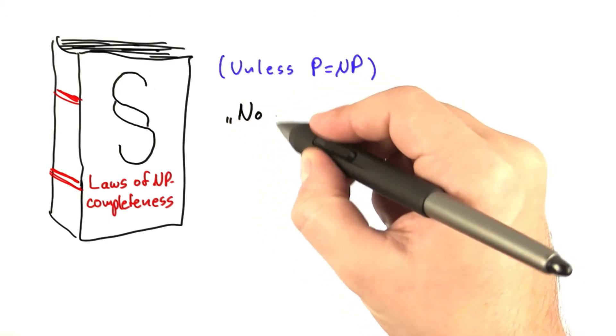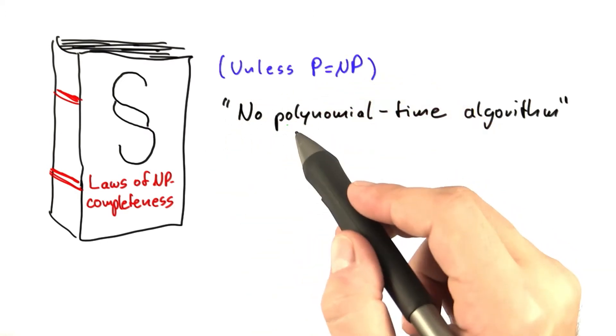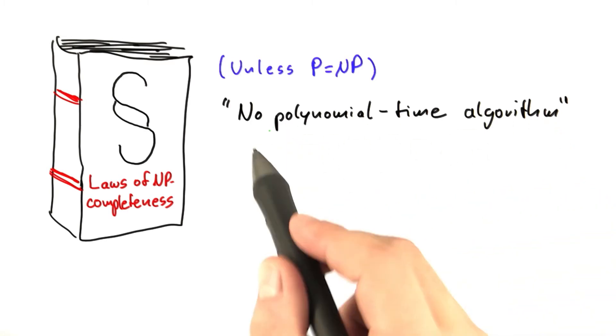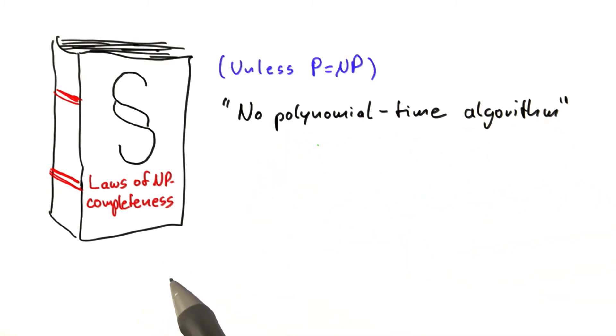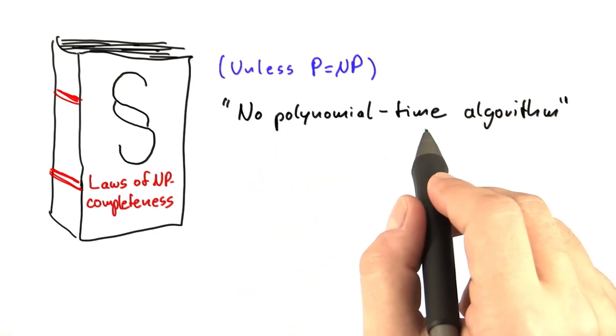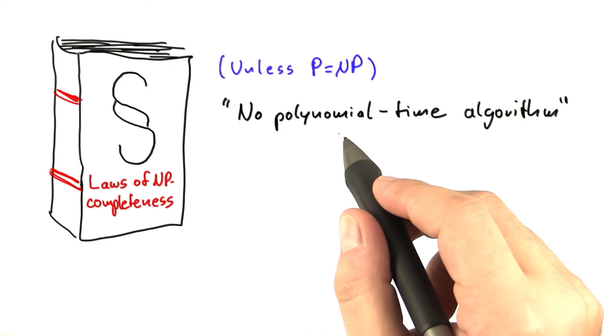They say no polynomial time algorithm. So now it's time to think like lawyers and try to put loopholes into the statement here. And there's two loopholes that you can poke into this. One is that we only say no polynomial time. We do not say exponential time.